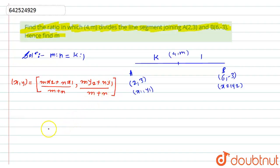Now, here I will simply put the values. So, the point which is given to us, that is (4,m), will be equal to: k times 6 plus 1 times 2, divided by k plus 1.